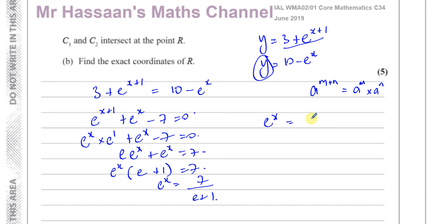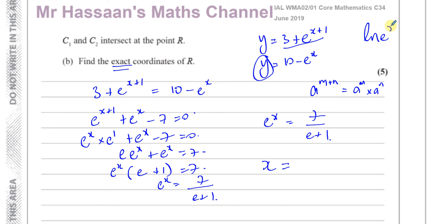We want to find x, not e to the power of x. So we take the natural log of both sides. The left side becomes x because ln(e^x) equals x times ln(e) and ln(e) equals 1. Therefore x equals ln(7 over (e plus 1)). That's an exact coordinate.